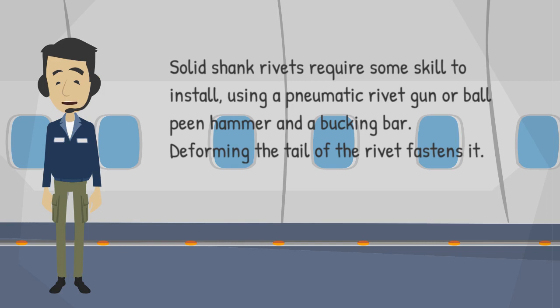Solid shank rivets require some skill to install, using a pneumatic rivet gun or ball-peen hammer and a bucking bar. Deforming the tail of the rivet fastens it.